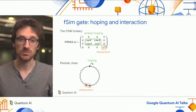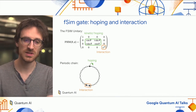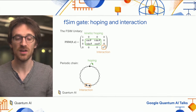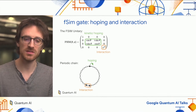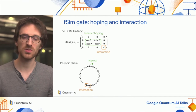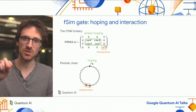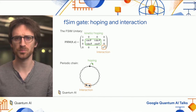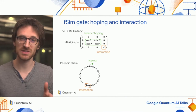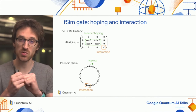To realize interacting systems on our device, we are using the FSim gate. The FSim unitary has two components: the first is the kinetic hopping term in green, corresponding to excitations moving on the chain; the second is interaction, corresponding to a phase accumulated when two excitations come close together.